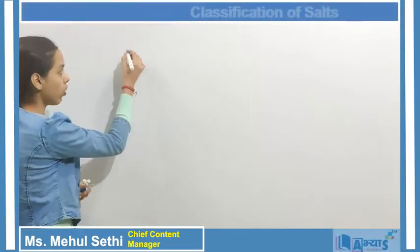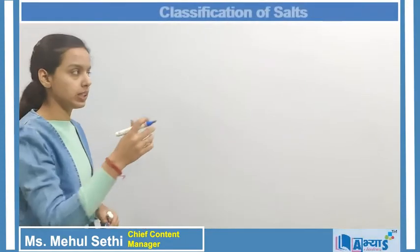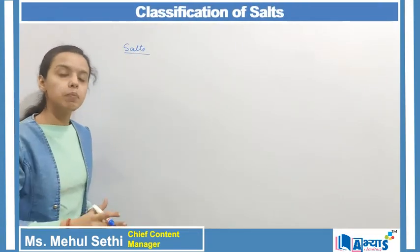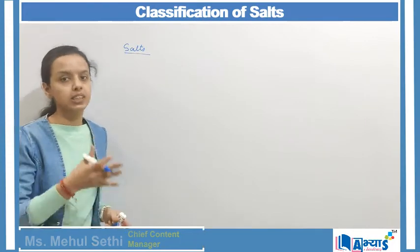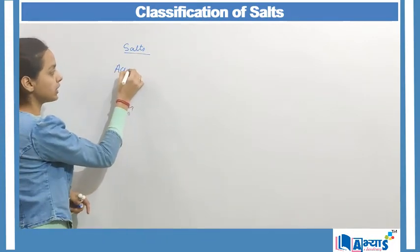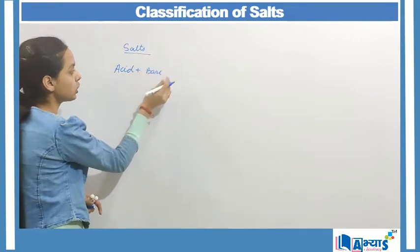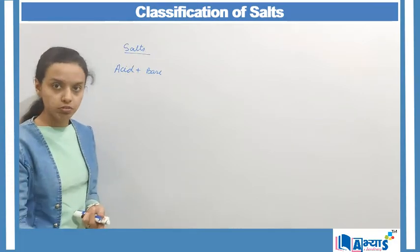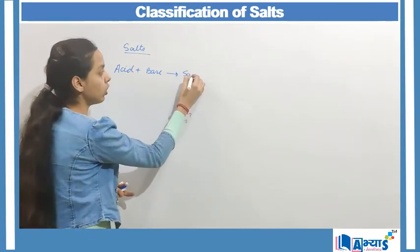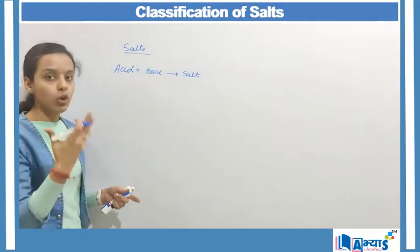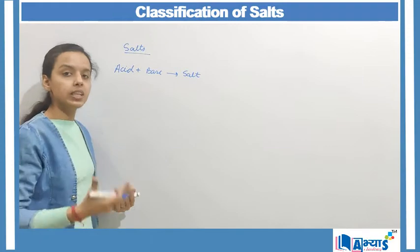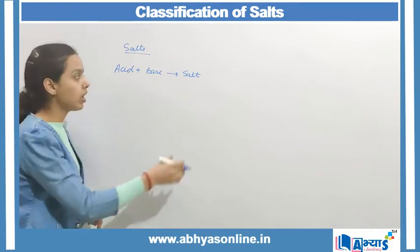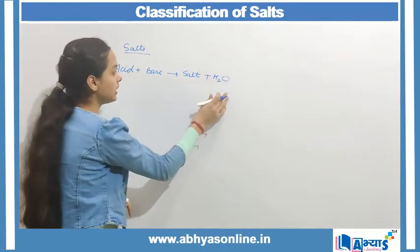Let us now discuss the concept on the classification of salts. Salts are prepared by the neutralization reaction of acid and base. When an acid reacts with a base, they neutralize the effect of each other — they cancel out the effect of each other — and we will get a neutral salt, or a salt which is neither acidic nor basic. Sometimes we get an acidic salt, sometimes we get a basic salt. These are the classifications of salt we will discuss today, and we get salt and water from this reaction.